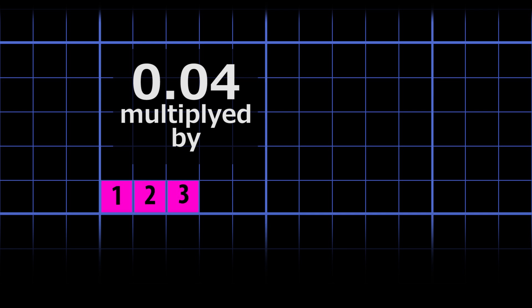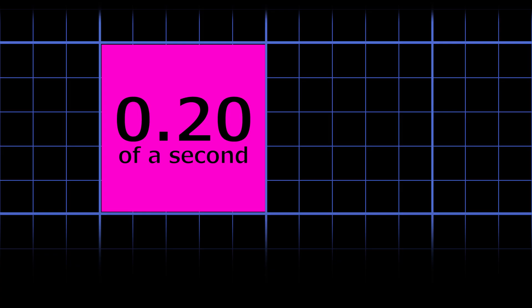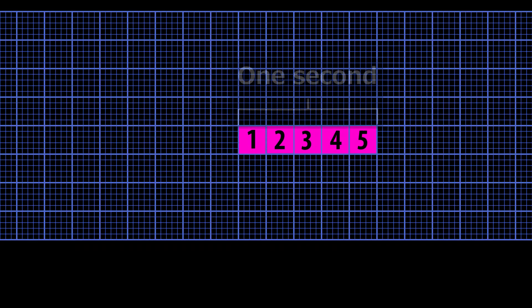So 0.04 times five small boxes equals 0.20 seconds in one large box. And just like five $20 bills equals $100, five large boxes equals one second.